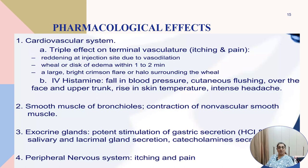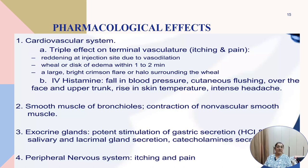The effect of histamine on the cardiovascular system includes the triple response on terminal vasculature: reddening of the skin, wheal production, and formation of a flare surrounding the wheal. If intravenous histamine is given, there is a fall in blood pressure, cutaneous flush over the face and upper trunk due to vasodilatation, rise in temperature, and intense headache.